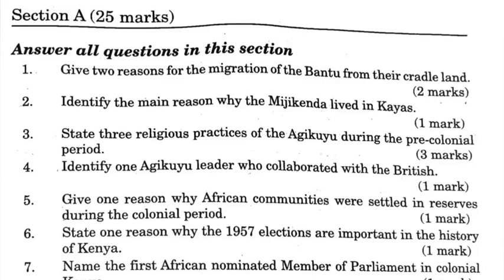Question 1: Give two reasons for the migration of the Bantu from the cradle land. One, search for land for agriculture. Two, population pressure in the cradle land. Three, they were looking for pasture for their livestock. Four, to escape from natural calamities such as drought and famine. Five, the outbreak of diseases forced them to migrate. Six, spirit of adventure.